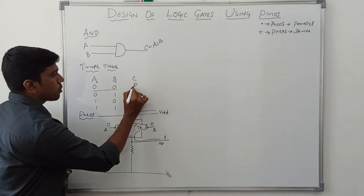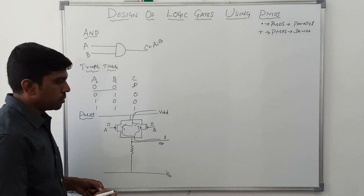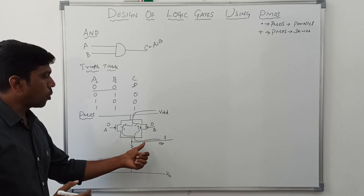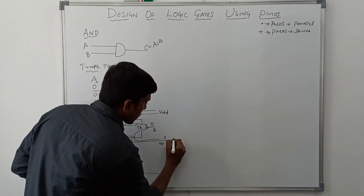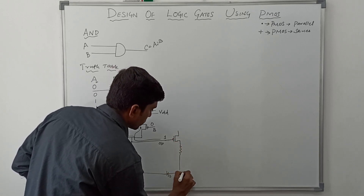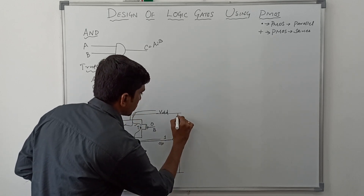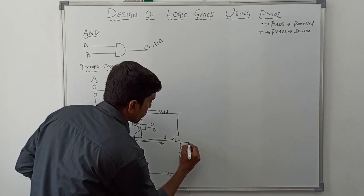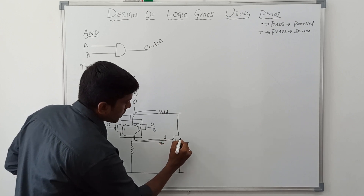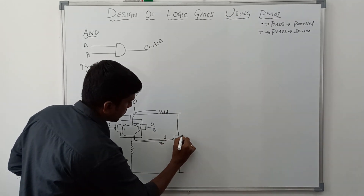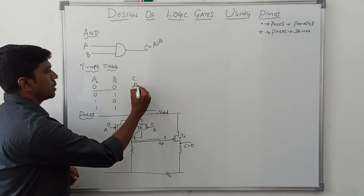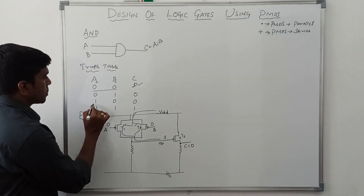But the actual output from the truth table is 0, so this is an invalid output. To get the valid output, I connect one inverter at the output of this PMOS logic. The inverter circuit takes this output between the pull-up and pull-down network. When the input of the inverter is 1, the transistor T3 turns off.